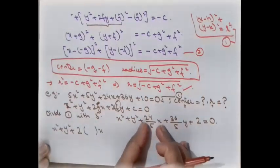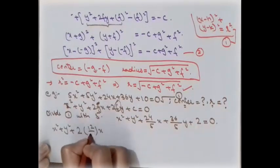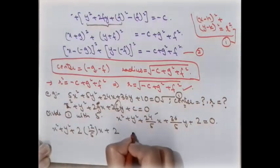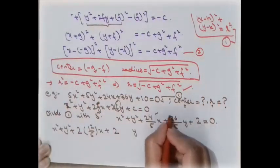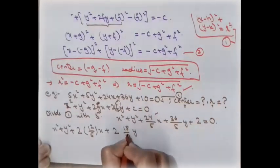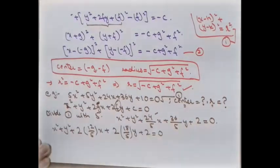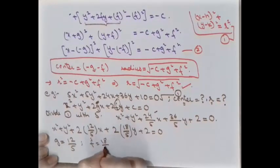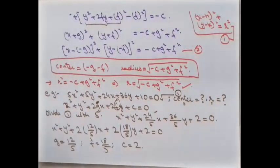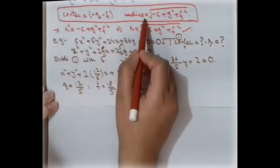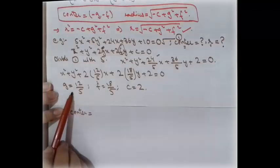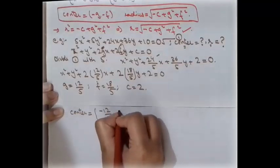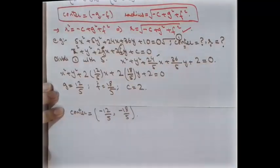Comparing with the general form x² + y² + 2gx + 2fy + c = 0, we identify: 2g = 24/5 so g = 12/5; 2f = 36/5 so f = 18/5; and c = 2. Therefore, the center is (−g, −f) = (−12/5, −18/5).